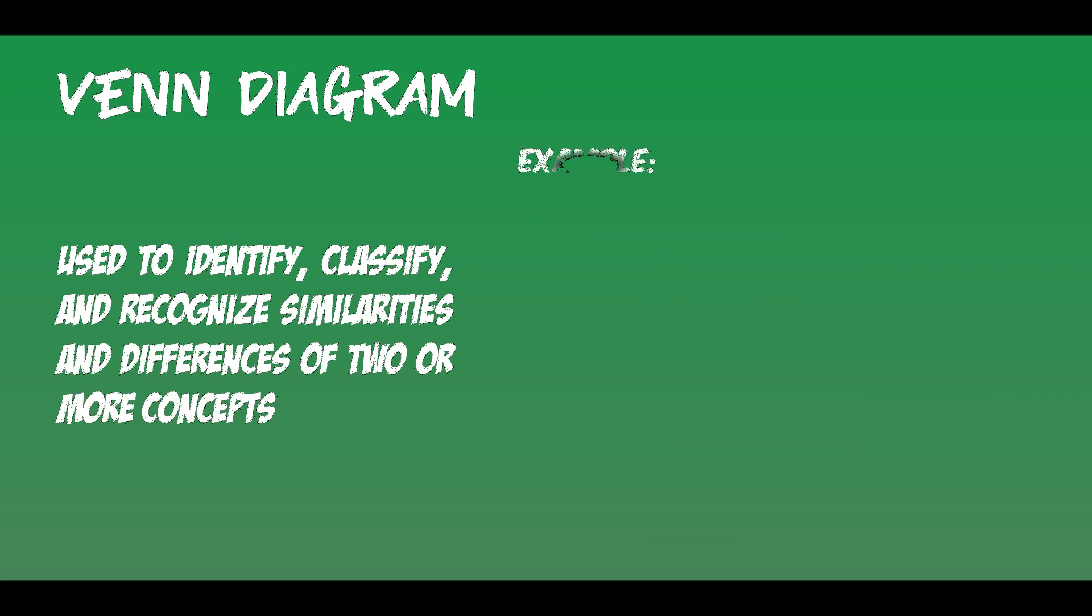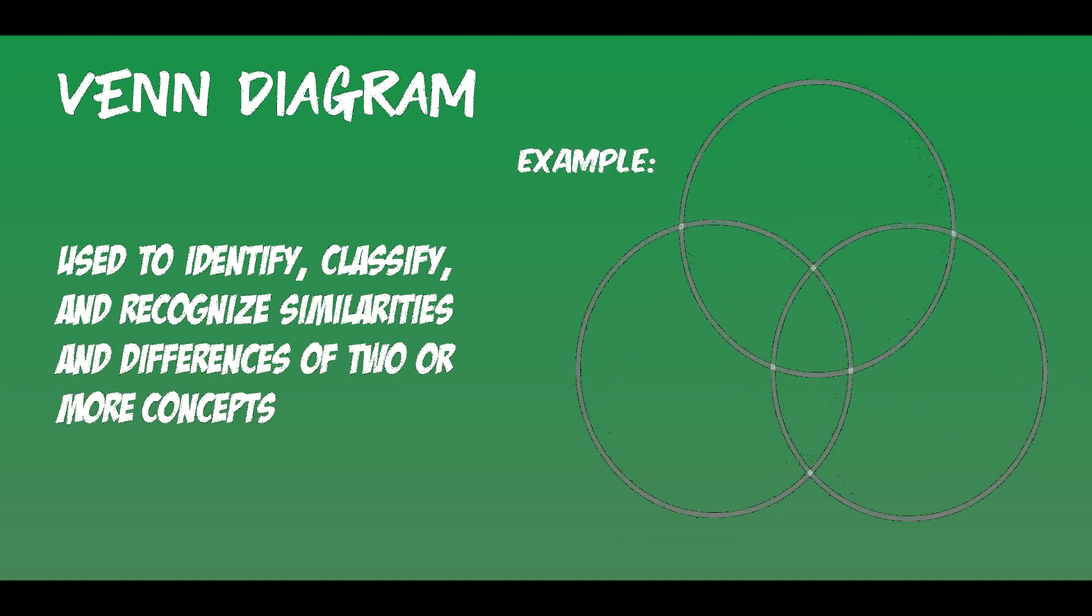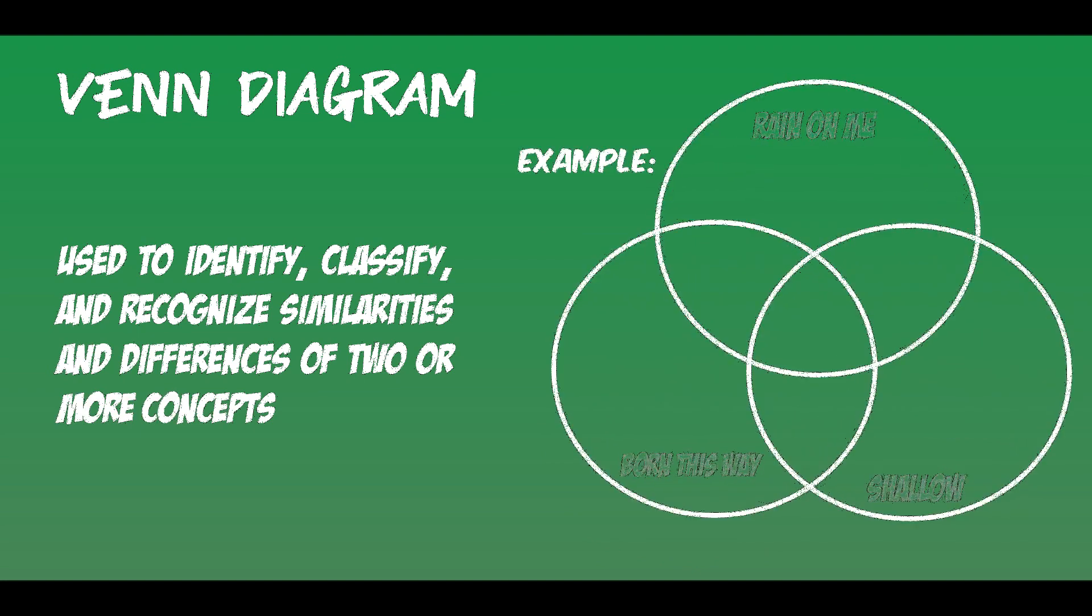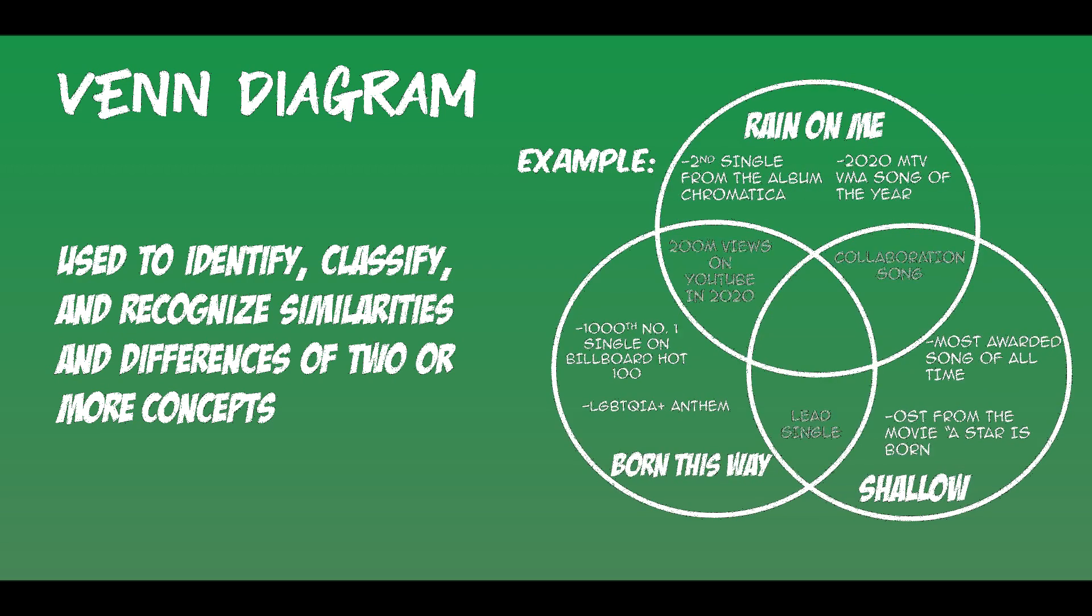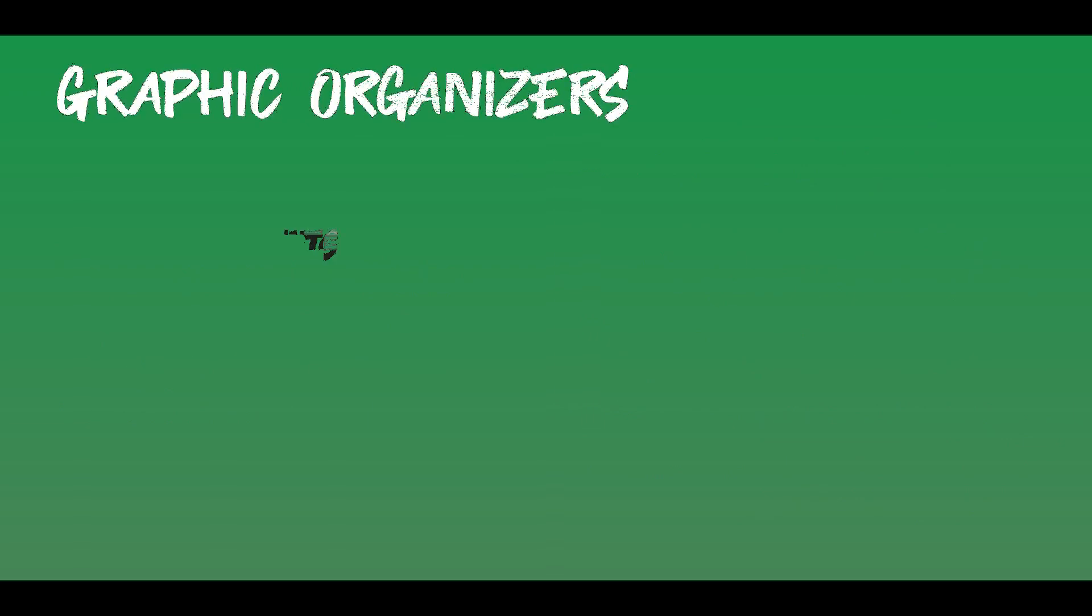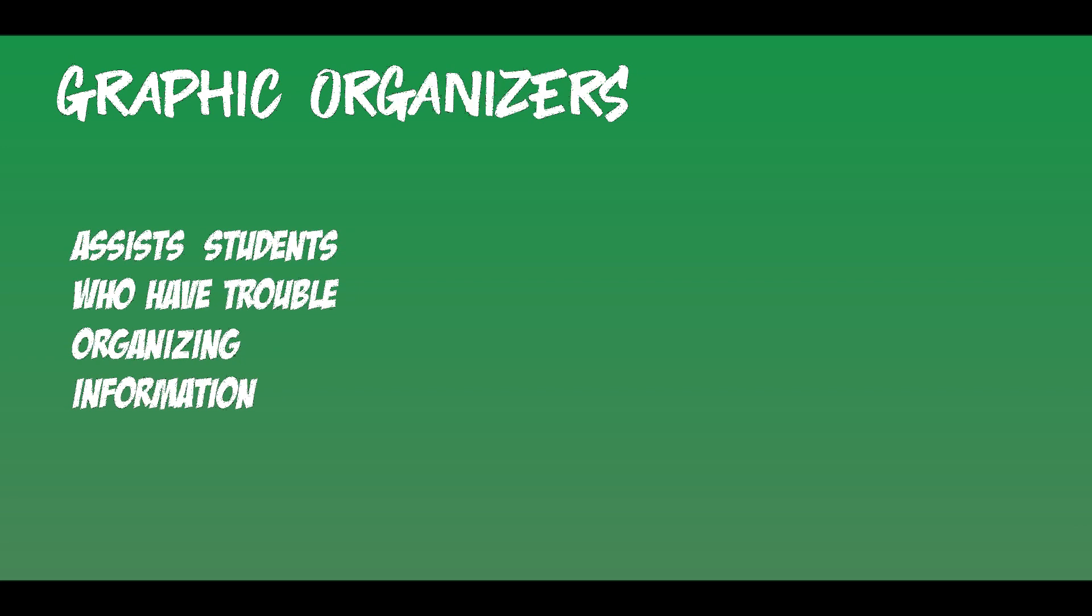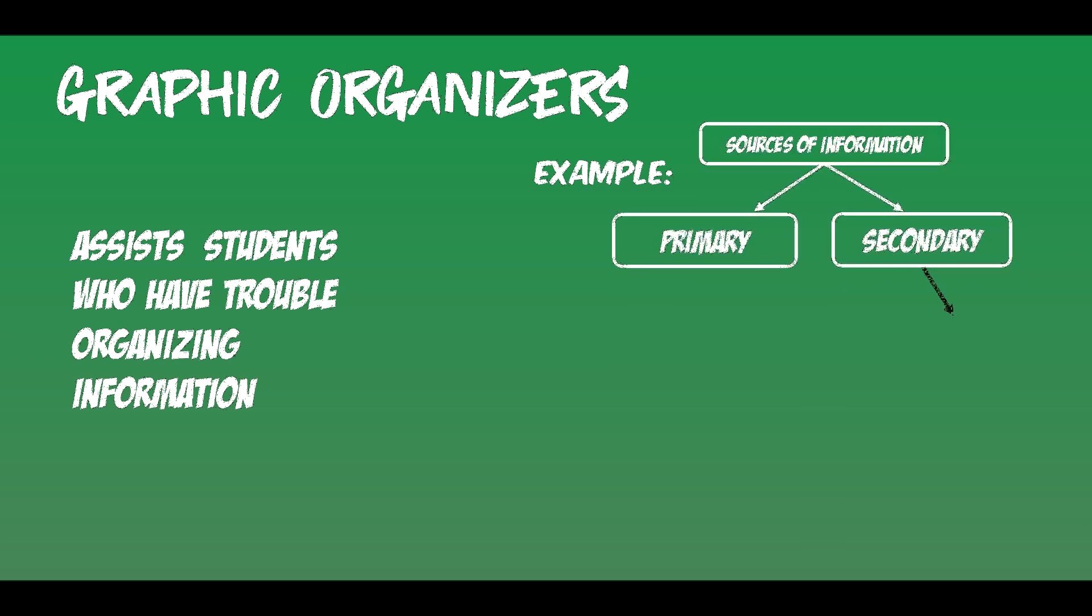Venn diagram is used to identify, classify, categorize, or recognize similarities and differences of two or more subjects, ideas, thoughts, or concepts. Specific organizers are usual displays that have key contact information. These textual aids provide students with structure for abstract concepts and designed for those who have trouble organizing information and thoughts.